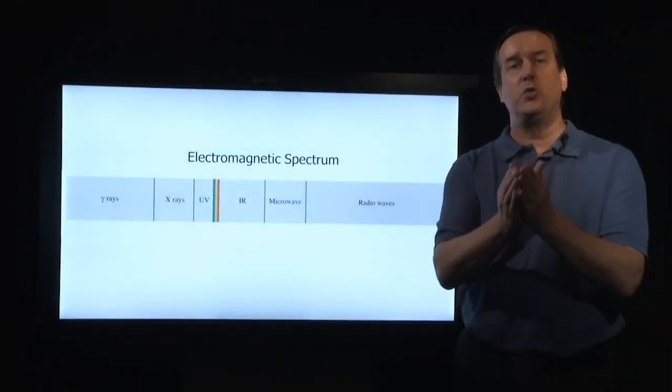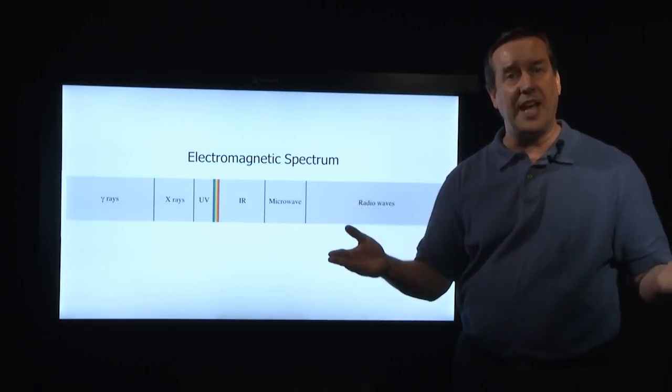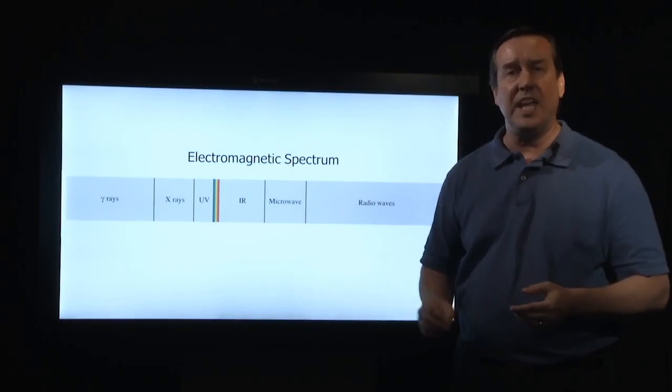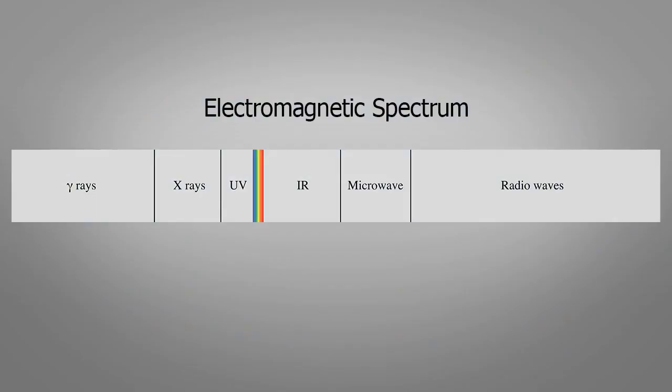The electromagnetic spectrum includes all the various forms of light, and in this diagram, one can see that visible light is a relatively small portion of it.